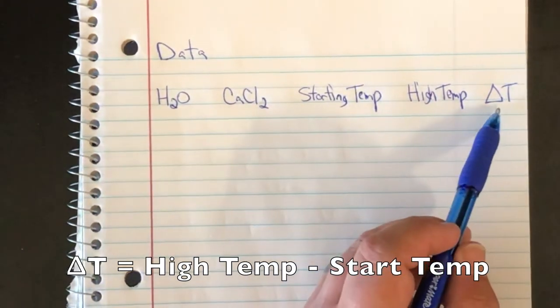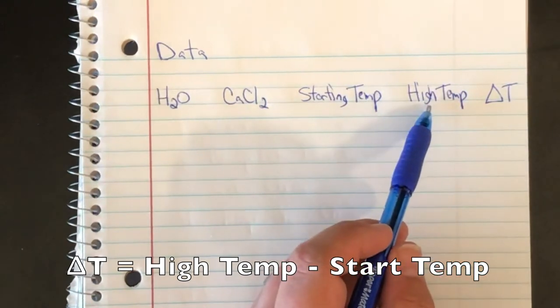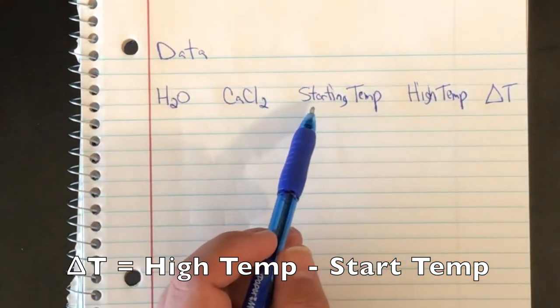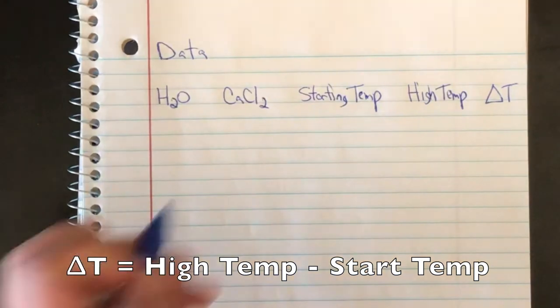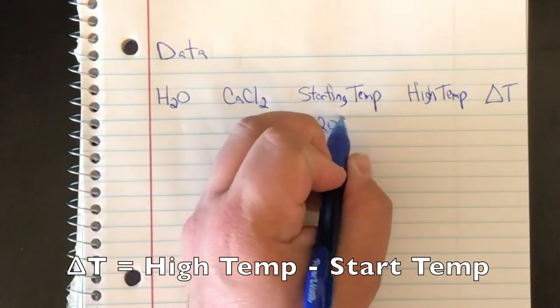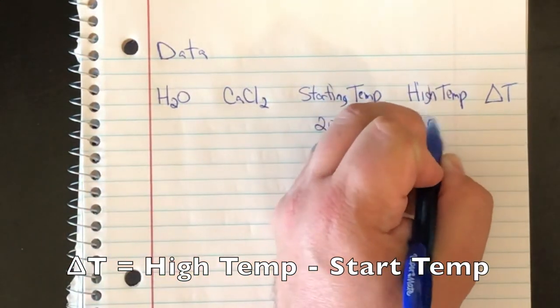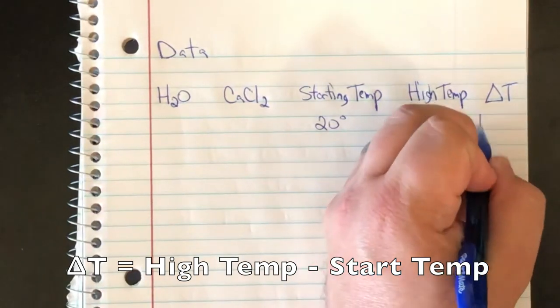To get to delta T, you're going to take the high temperature and subtract the starting temperature. So for example, if it started at 20 degrees and went to 30 degrees, this would be 10.